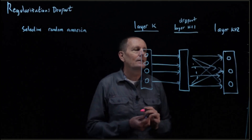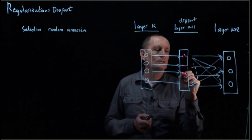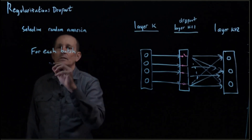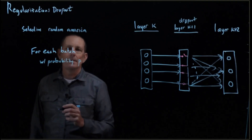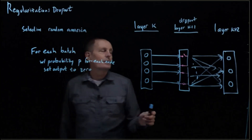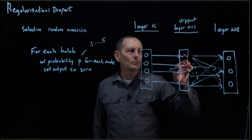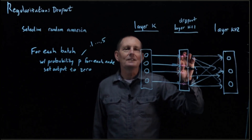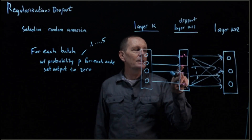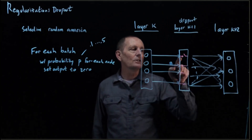Instead, what we're going to do is add in a little switch here, and this switch can be on or off. For every batch, with probability p for each node, we set the output to 0. P might be 0.1 all the way up to 0.5. So with probability 0.1, we flip our 10-sided die — and only this one happens to be turned off, while the others are left alone.